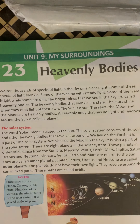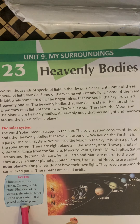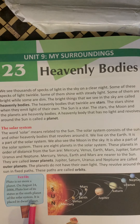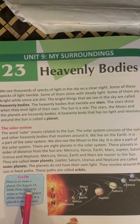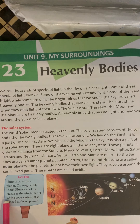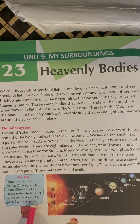Woh bahut chhota planet hai, isliye usko planet se hata diya gaya hai. Usse dwarf planet bula diya gaya hai. Pluto is no more a planet. On August 24, 2006, Pluto lost its status as the 9th planet of the solar system. It is placed in the dwarf planet category.